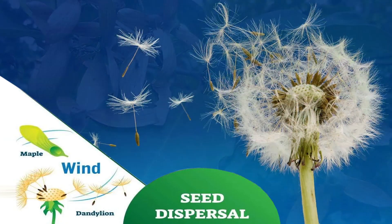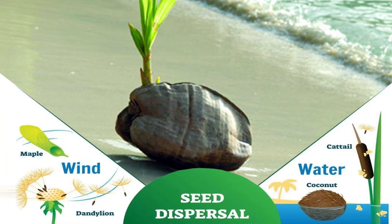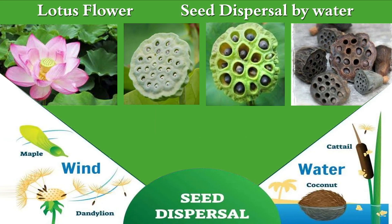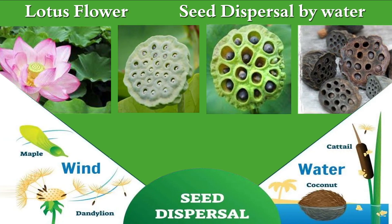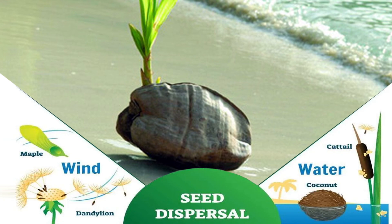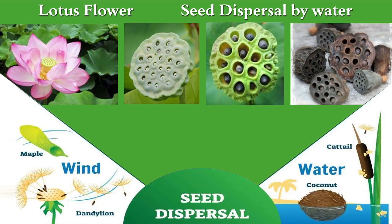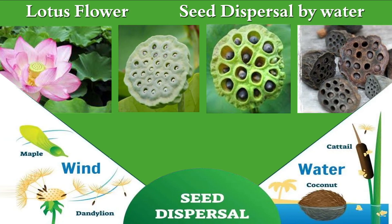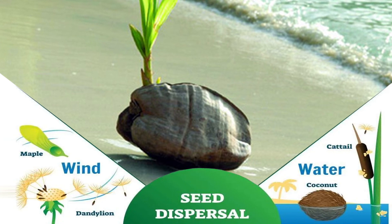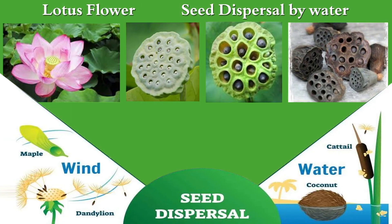Next is dispersal by water. Seeds of some plants growing in water or near water bodies are dispersed by water. Some seeds near water bodies like rivers, lakes, and oceans are dispersed this way. For example, coconut and lotus — coconut has a fibrous outer covering, which is thread-like, making it light. So if coconut seeds fall into water bodies, wherever they get favorable conditions, they germinate there. This helps the seeds float on water and move long distances.